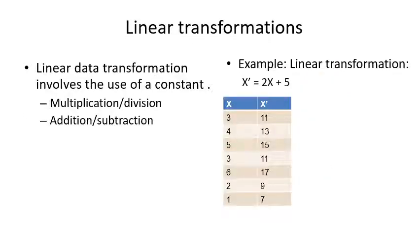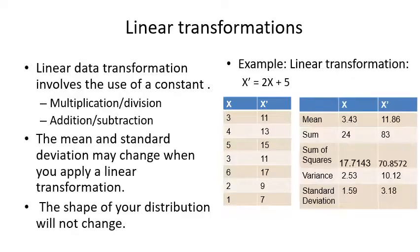Linear transformations essentially are ones that are just moving the values. We're not changing the shape of the distribution — that's an important thing with linear transformations. You're just moving the values, not changing the shape. So it's things like multiplication and division as well as addition and subtraction, at least when multiplication isn't involving zero.